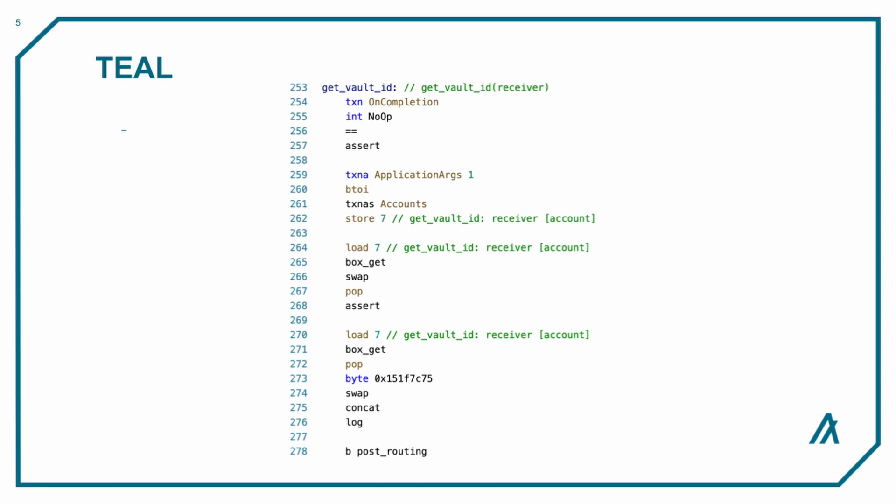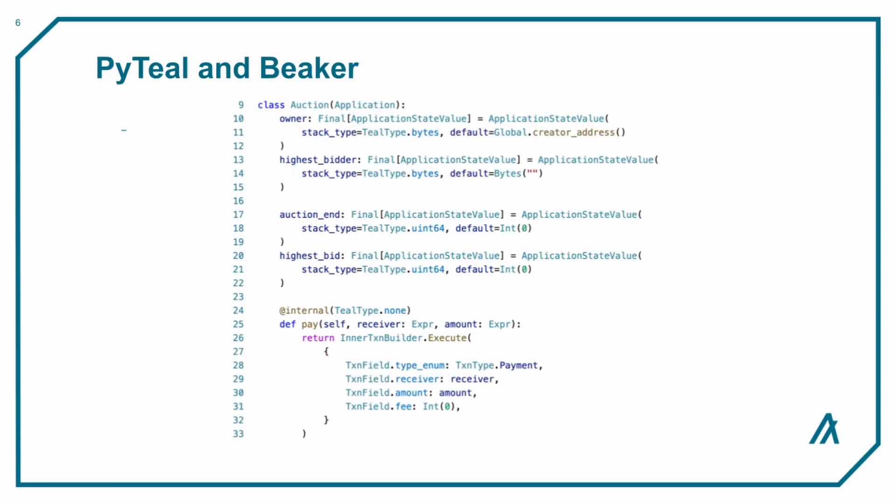There are also a lot of options when it comes to high-level languages on Algorand. The primary tool for smart contract development on Algorand is PyTeal, a Python library for generating Teal. It's also recommended to use Beaker, a Python framework for easily creating applications alongside PyTeal.